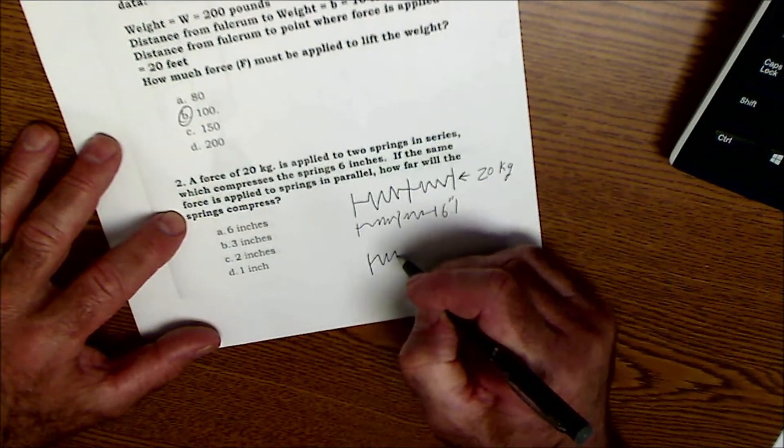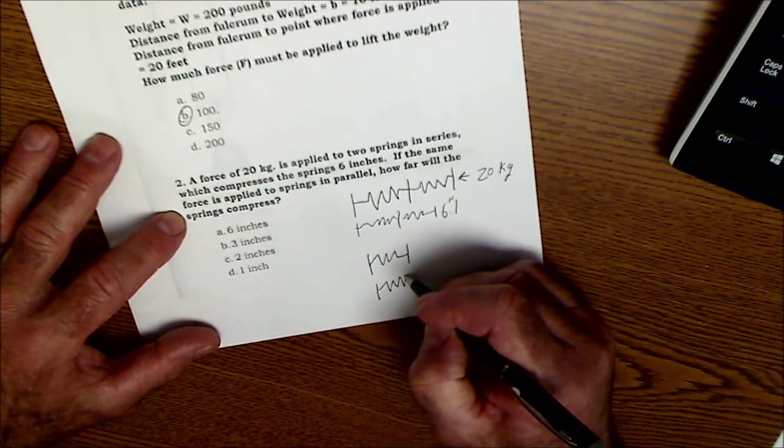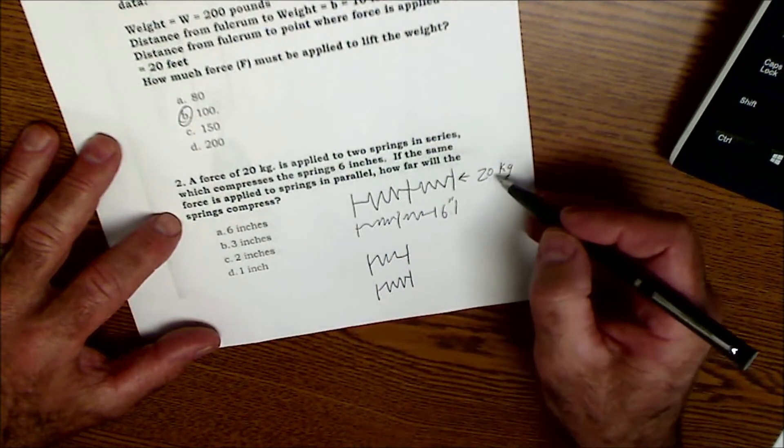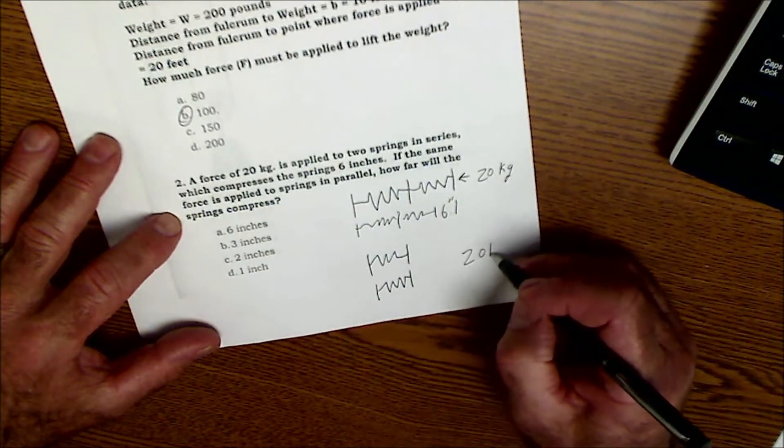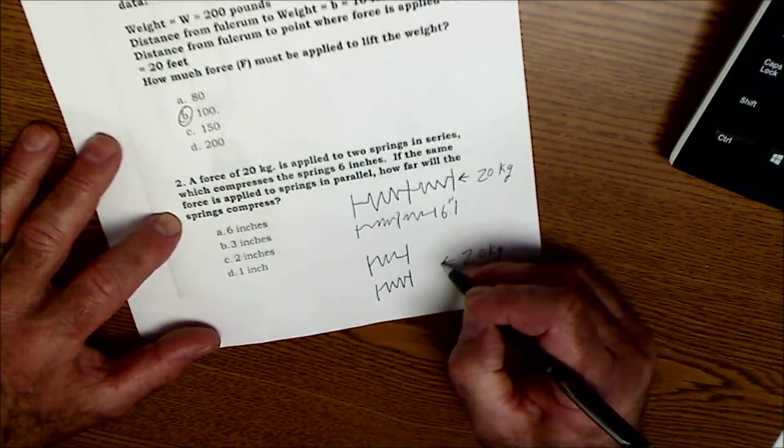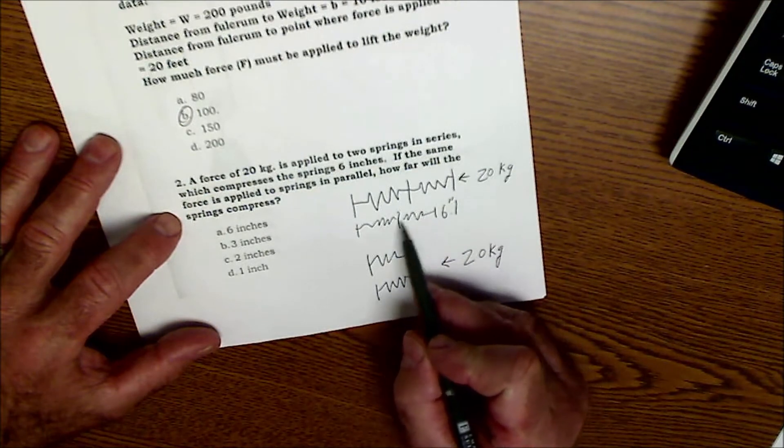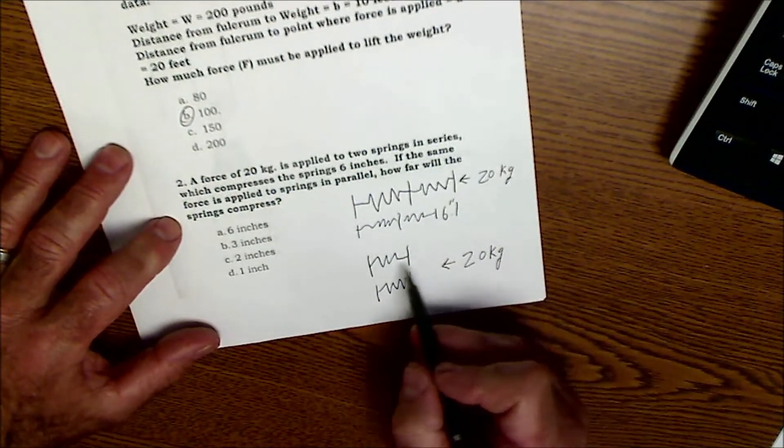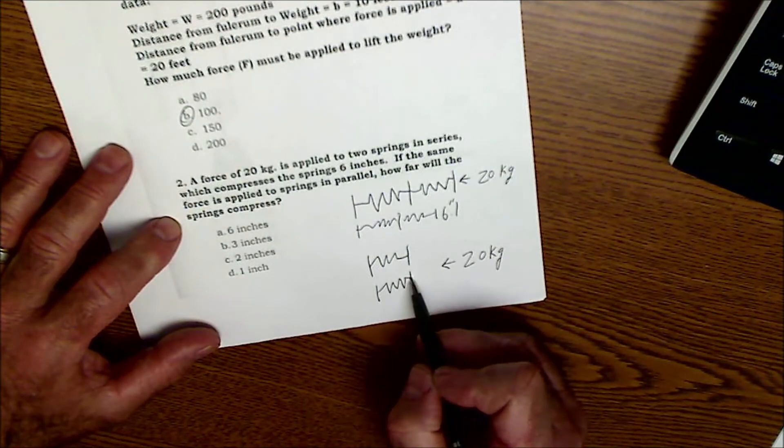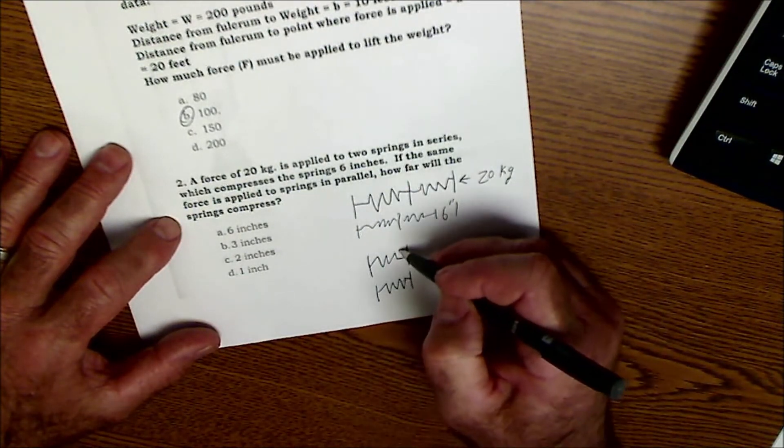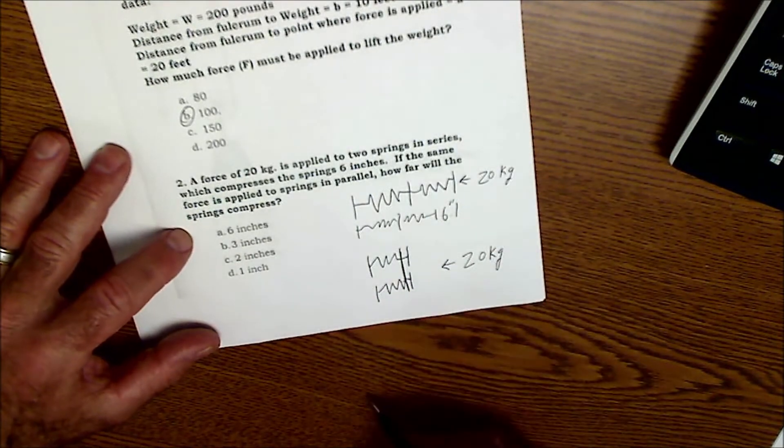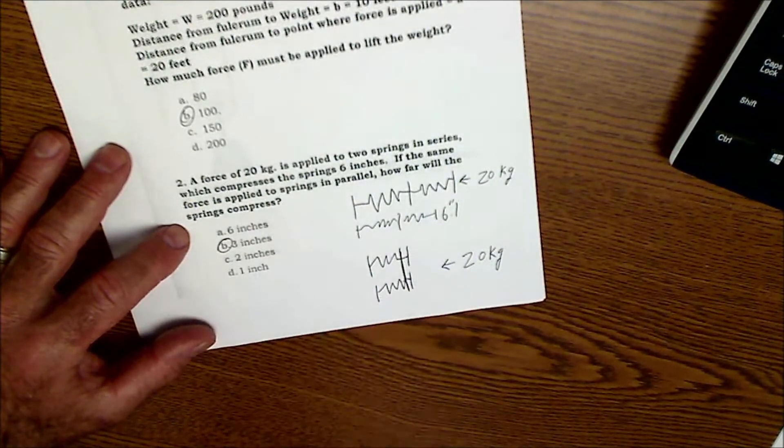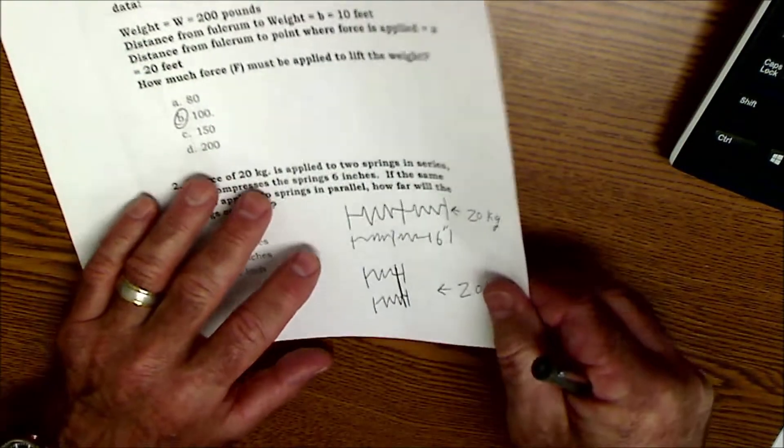If the same force is applied to springs in parallel, well, parallel means next to each other, like this. How far will the springs compress? I'm putting the same amount of force into these two springs in parallel here. Here, each spring goes in three inches, and then another three inches to give me the six. Here, this one's going to go in three, and this one's going to go in three. So together, they're only actually traveling back that three inches. So how far will the springs compress? Well, the answer is going to be the three inches.